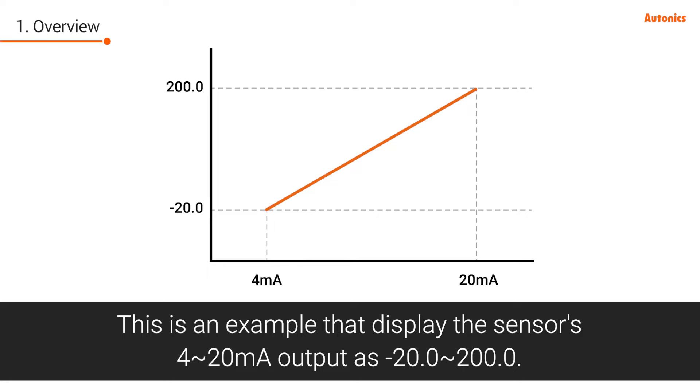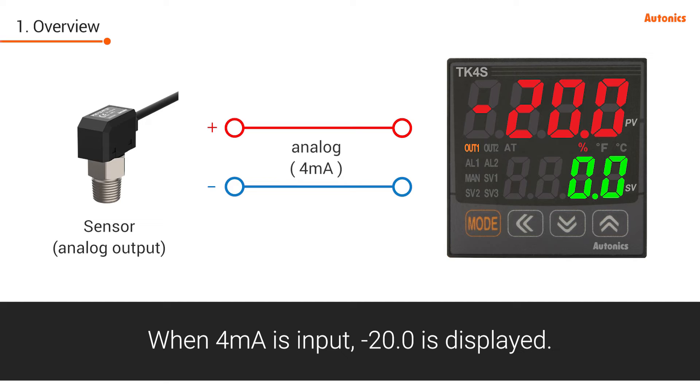This is an example that displays the sensor's 4 to 20 mA output as minus 20.0 to 200.0. When 4 mA is input, minus 20.0 is displayed.